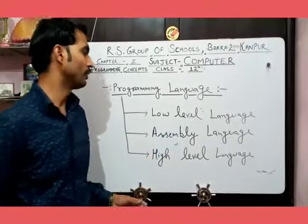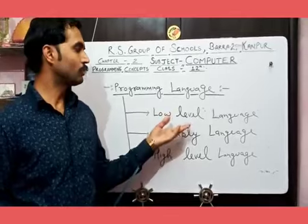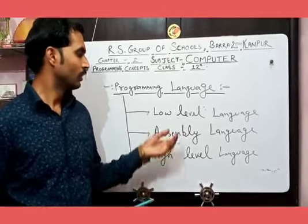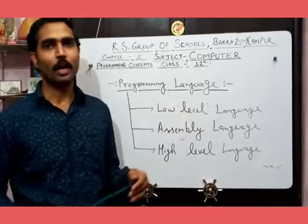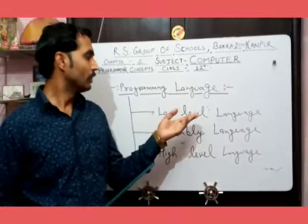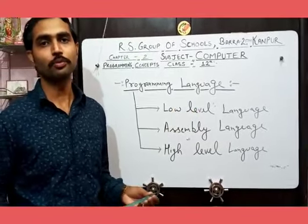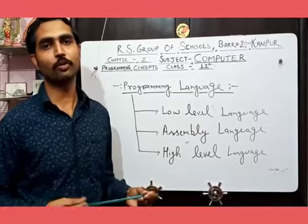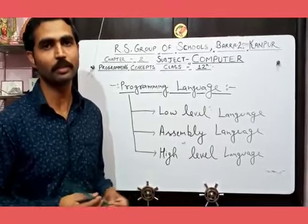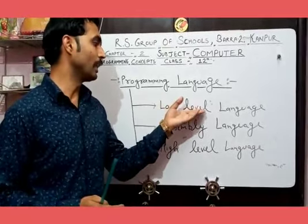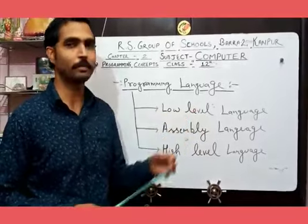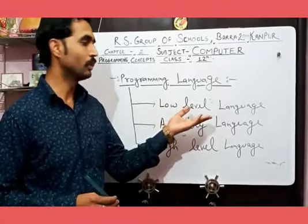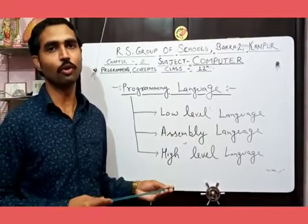Now let's see what is Low Level Language. Low Level Language is also called Machine Language. It consists of binary digits, that is 0 and 1. Binary digits are also called Bits. Low Level Language is hard to design, and this is the language that can be understood by a computer without using any translation program. Our computer works with binary language, that is 0 and 1.